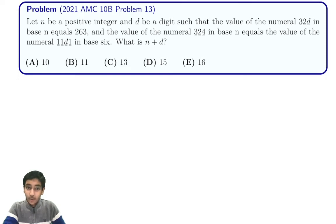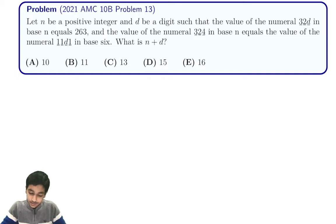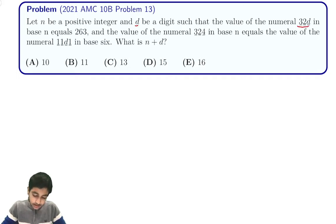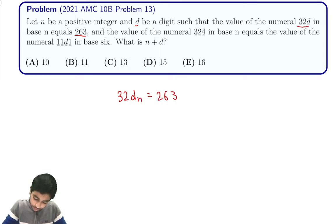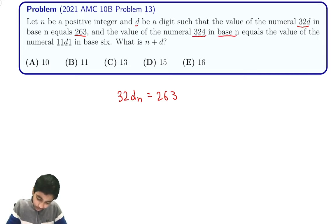Hi everyone. In this video, we're going to explore the 2021 AMC 10b problem number 13. Let n be a positive integer and let d be a digit such that the value of 32d in base n equals 263. So 32d base n equals 263. Then the value of numeral 324 in base n equals 1d1, so 324 base n is 1d1.